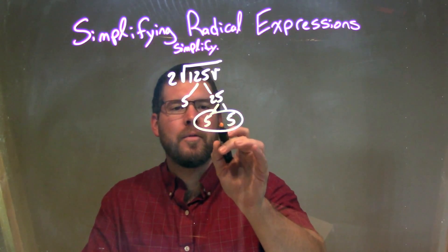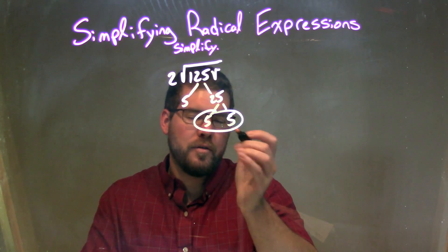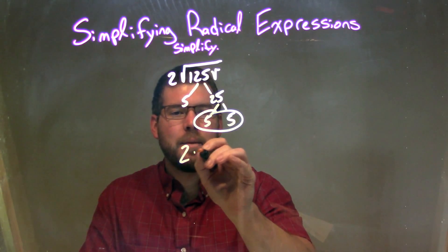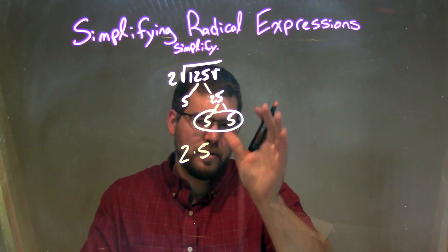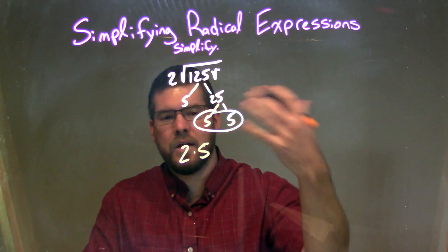I'm going to put all the pairs on the outside with the 2. So there's only one pair of 5s. So we have 2 times 1 of the 5s represent the result of a pair, so a pair on the inside, a single on the outside.